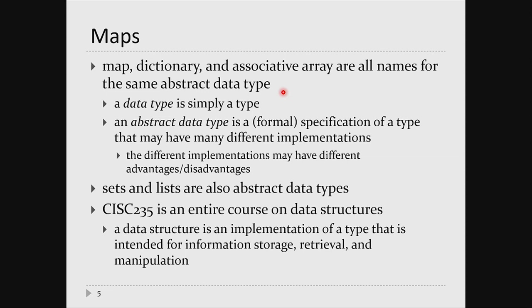What's an abstract data type? A data type is just a type — a set of values and what you can do with those values. An abstract data type is a formal specification of a type — a mathematical description. We don't normally teach you the mathematical specification in undergrad anymore, but many years ago it was common to specify what a list is mathematically.